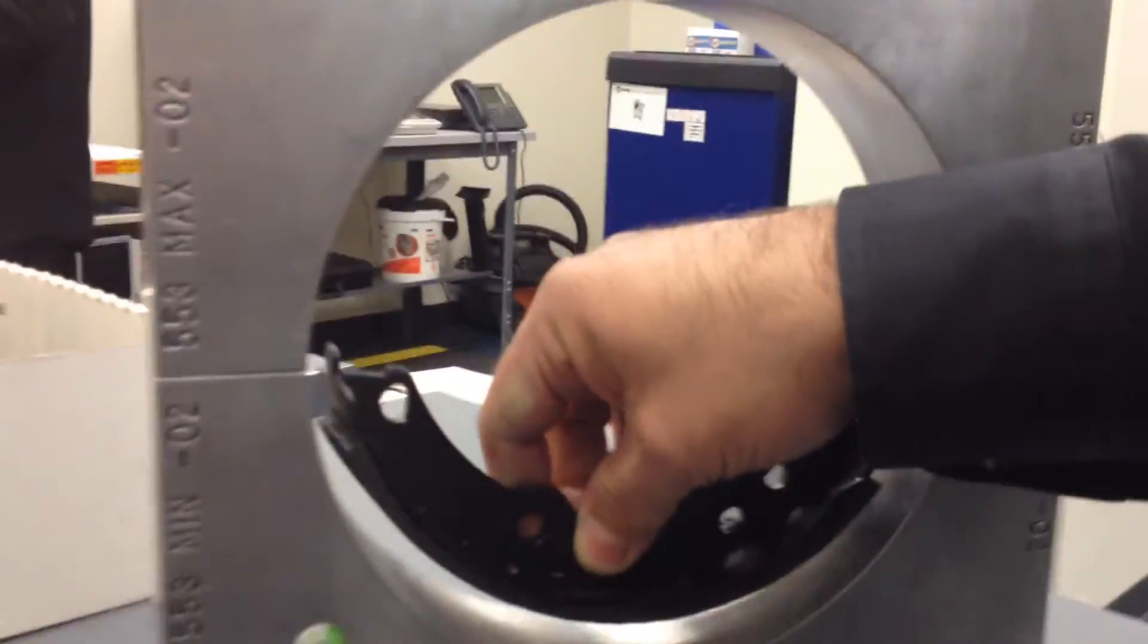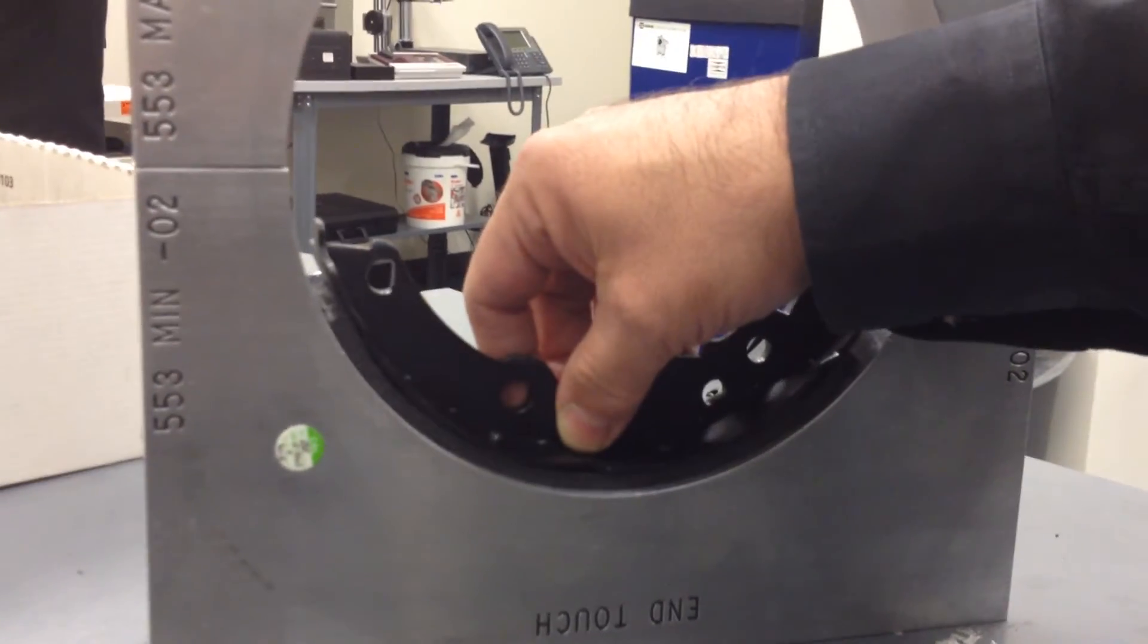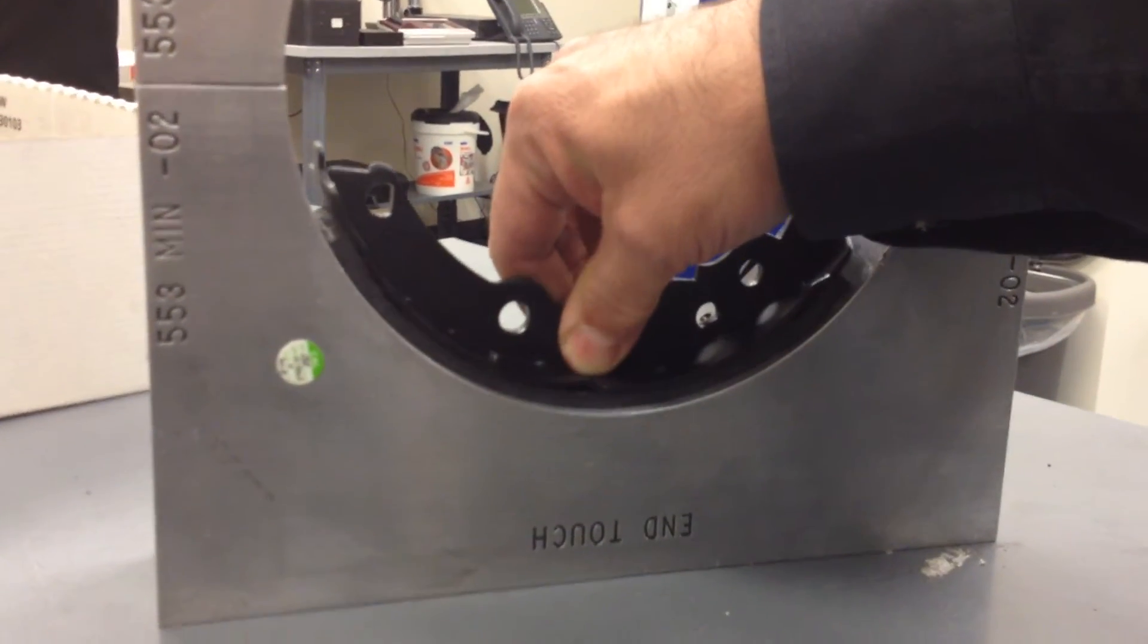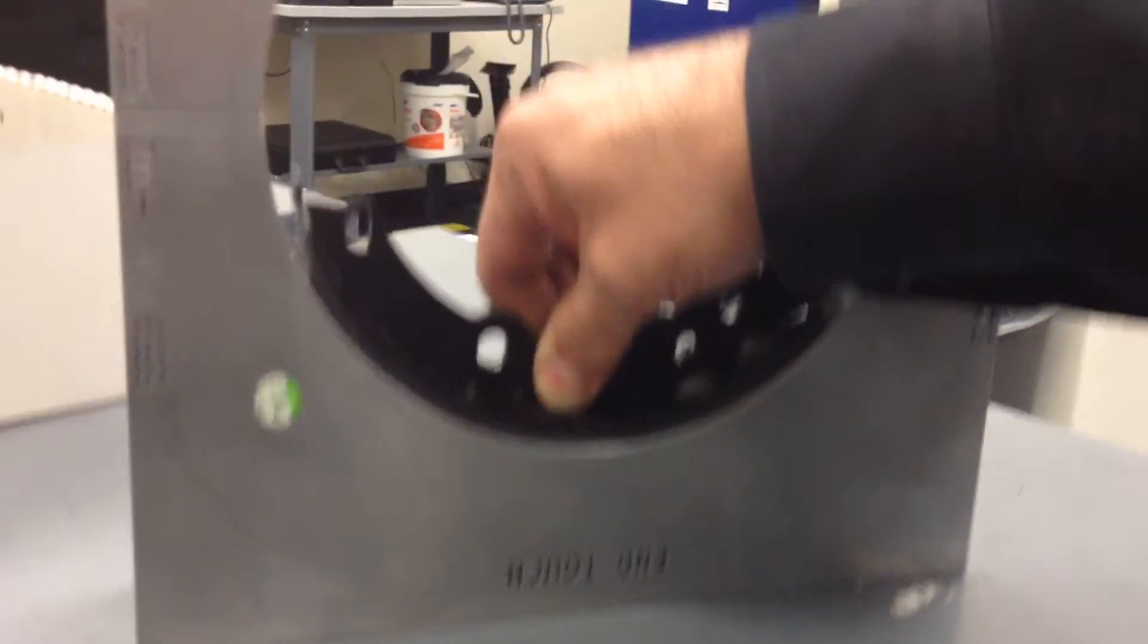Now down on the bottom, what's going to happen is it's going to feel very similar to the way the center touch gauge did. It's still rotating back and forth.